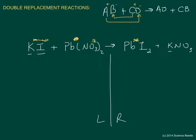For iodine, we've got one on the left but two on the right-hand side. The simple solution is to add another KI — now we've got two iodines on the left and two on the right. But doing so increases our potassium count to two on the left, while we only have one KNO₃ on the right, so we add another KNO₃. Now we have two potassium and two iodines on each side. Lead (Pb) is one on each side, and for nitrate we've got the subscript two giving us two, which matches the two KNO₃ on the right.